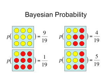In this case, it's most likely that I picked the yellow circle from the top left box, since it had the most yellow circles. So the probability for each box is the number of yellow circles from that box over the total number of yellow circles. So for the top left box it's 9/19, and then 4/19, 1/19, and 5/19 for the other boxes. Notice that all these probabilities add up to 1, as you'd expect.